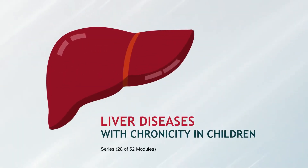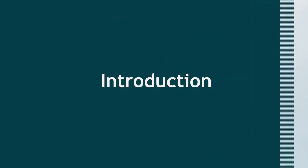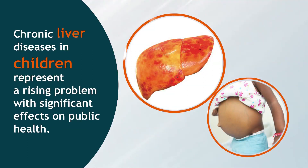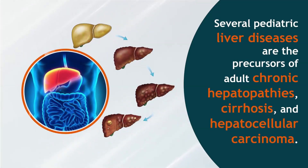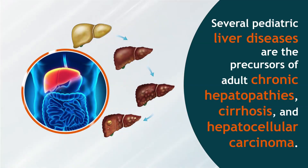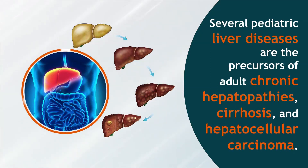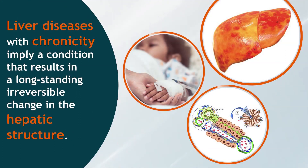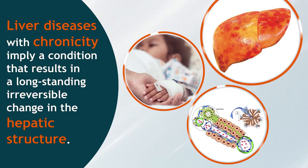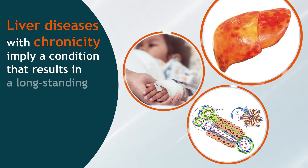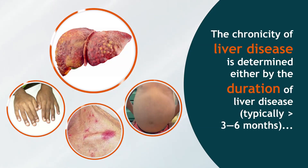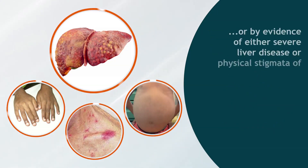Chronic liver diseases in children represent a rising problem with significant effects on public health. Several pediatric liver diseases are precursors of adult chronic hepatopathies, cirrhosis, and hepatocellular carcinoma. Liver diseases with chronicity imply a condition resulting in long-standing, irreversible change in hepatic structure. Chronicity is determined by the duration of liver disease, typically greater than three to six months.